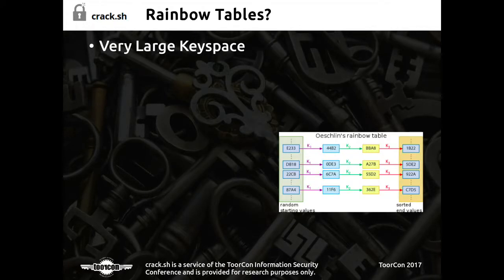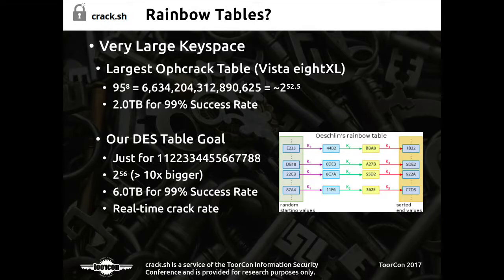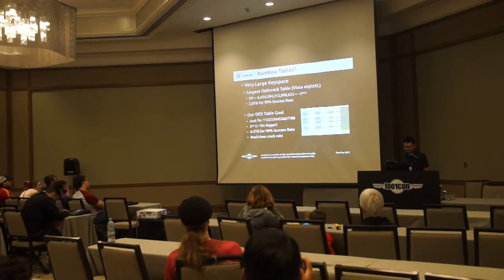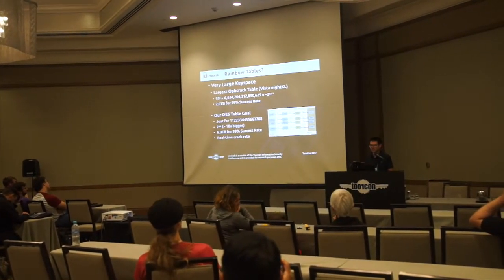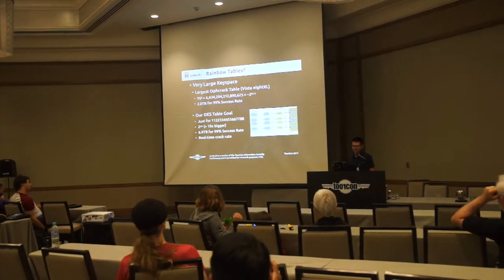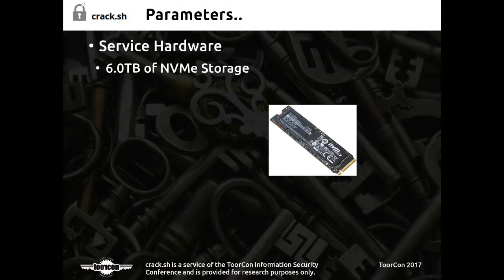We looked into making a rainbow table for this. The largest off-the-shelf rainbow table I could find was somewhere around 2^52, about two terabytes. Our goal was to make one for the whole DES key space — about 10 times bigger than the largest table out there — at a reasonable size with a crack speed close to real time, so we could offer this as a free service without worrying much about rate limiting.